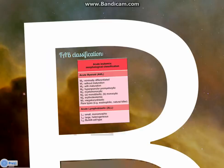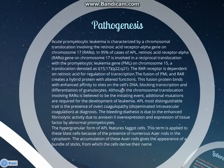Pathogenesis. Acute promyelocytic leukemia is characterized by chromosomal translocation involving the retinoic acid receptor alpha gene on chromosome 17. In 95% of cases, the retinoic acid receptor alpha gene on chromosome 17 is involved in a reciprocal translocation with the promyelocytic leukemia gene on chromosome 15 — a translocation denoted as t(15;17)(q22;q21). The RAR receptor is dependent on retinoic acid for regulation of transcription.